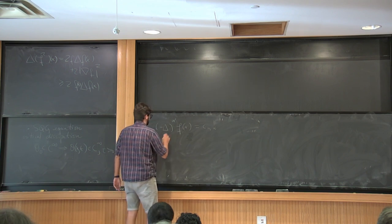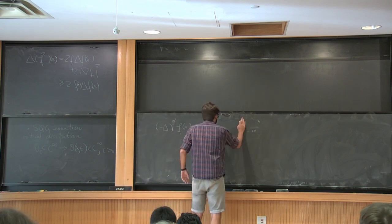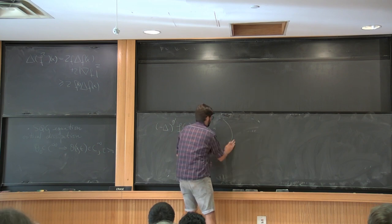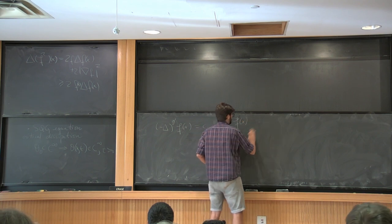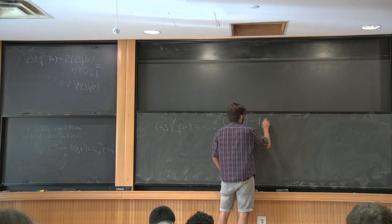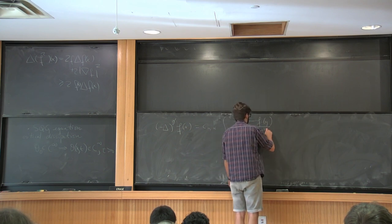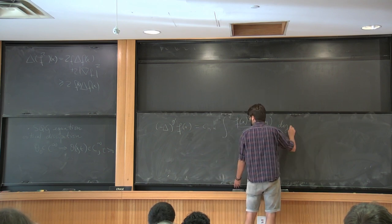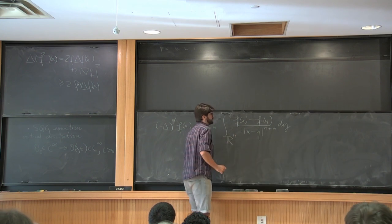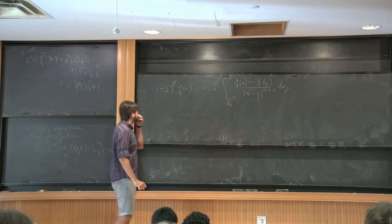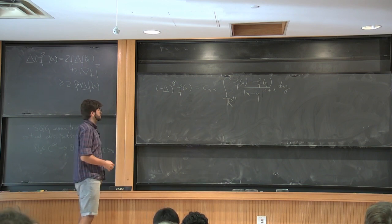Yeah, let me put a half here. So, it's going to be given by a principal value integral of this form: f(x) minus f(x minus y) over |y|^(n+α) dy in Euclidean space, okay? That's the definition. Or that can be taken as a definition, because you can prove that actually both things coincide.